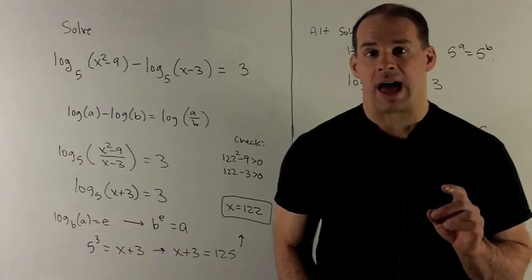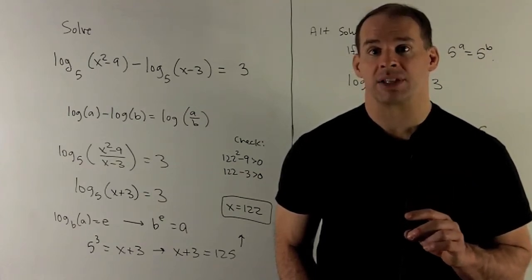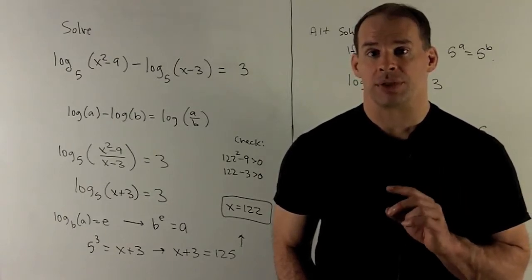Solve the equation log base 5 of x squared minus 9, minus log base 5 of x minus 3, is equal to 3.